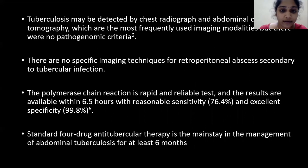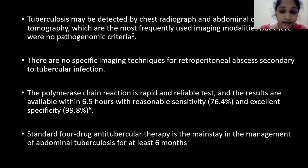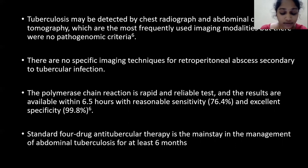Tuberculosis may be detected by chest radiograph and contrast-enhanced CT, which are the most frequently used imaging modalities, but there are no pathognomonic criteria and no specific imaging techniques for retroperitoneal abscess secondary to tubercular infection. Polymerase chain reaction is a rapid and reliable test with results available within 6.5 hours, with reasonable sensitivity and excellent specificity. Standard 4-drug antitubercular therapy is the mainstay in the management of abdominal tuberculosis for at least 6 months.